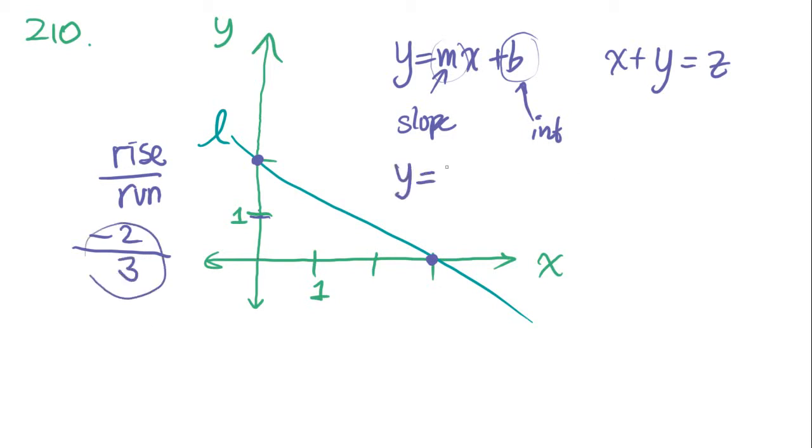y equals negative 2 over 3x plus b. Now let's figure out the b. b is the y-intercept. What that means is b is what y is when x equals 0. So if x equaled 0, in this case x was here, then y is 1, 2. So the y-intercept is going to be 2. y equals negative 2 thirds x plus 2.